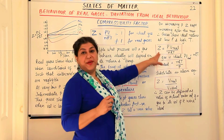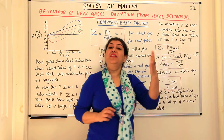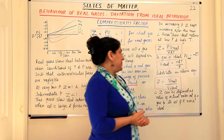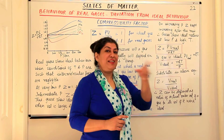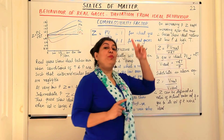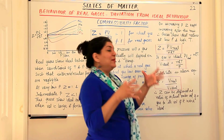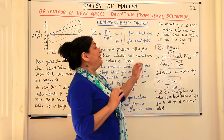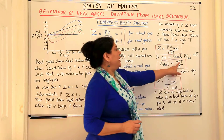For a real gas, the compressibility factor is PV_real / nRT, where V_real is the volume of the real gas. For the ideal gas equation PV = nRT, V here is V_ideal — the volume of the ideal gas. The volume of an ideal gas is different from that of a real gas, as discussed in the previous video. From PV = nRT, V_ideal = nRT / P. So in the compressibility factor equation, nRT / P is simply V_ideal.